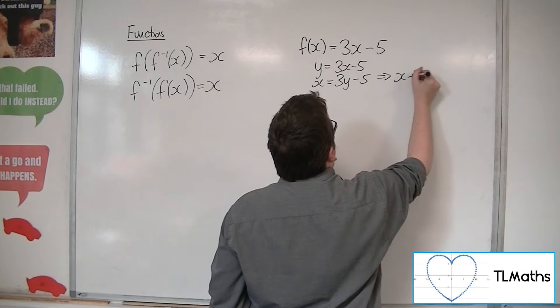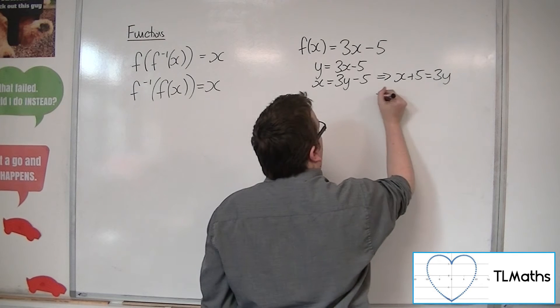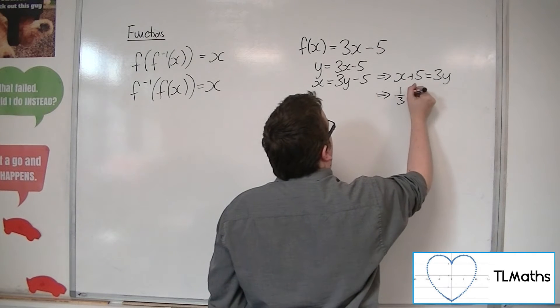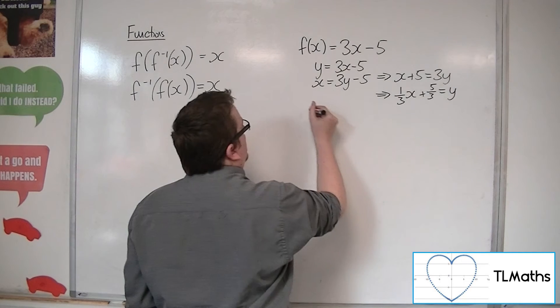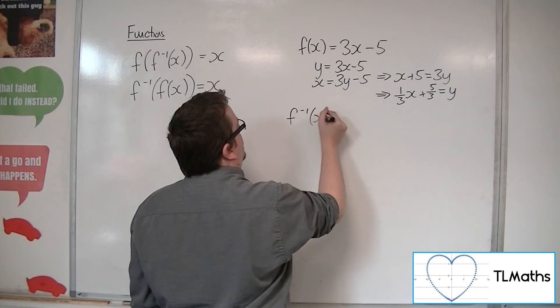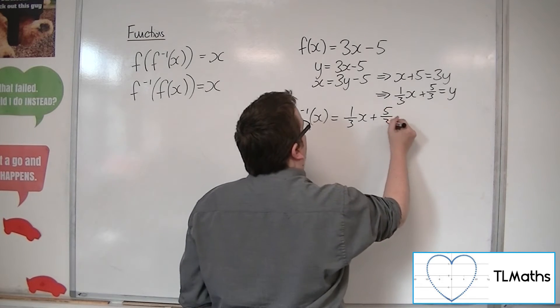Add the 5 to both sides, divide both sides by 3, so a third x plus 5 thirds will be y. So the inverse function will be a third x plus 5 thirds.